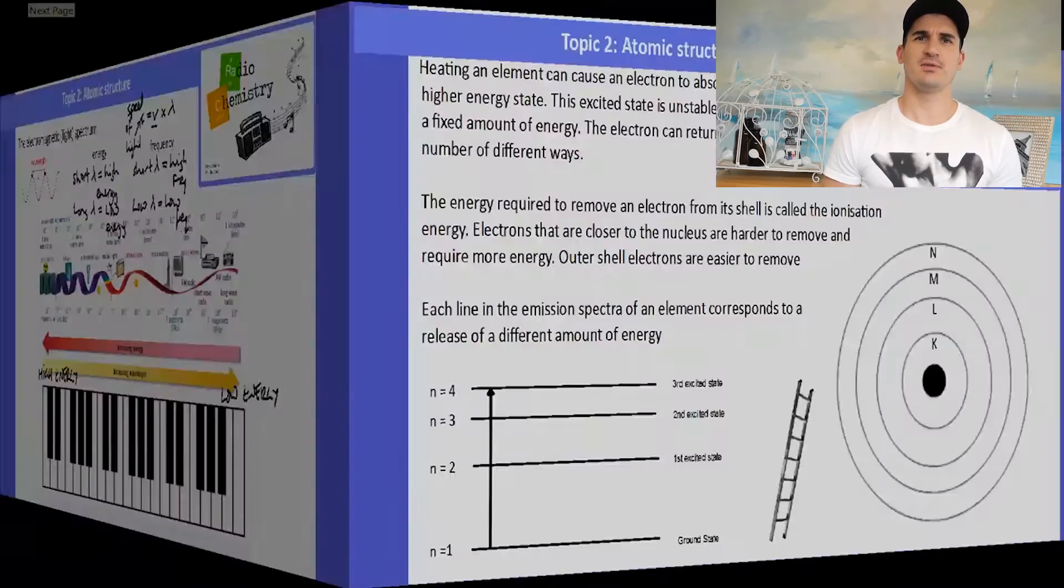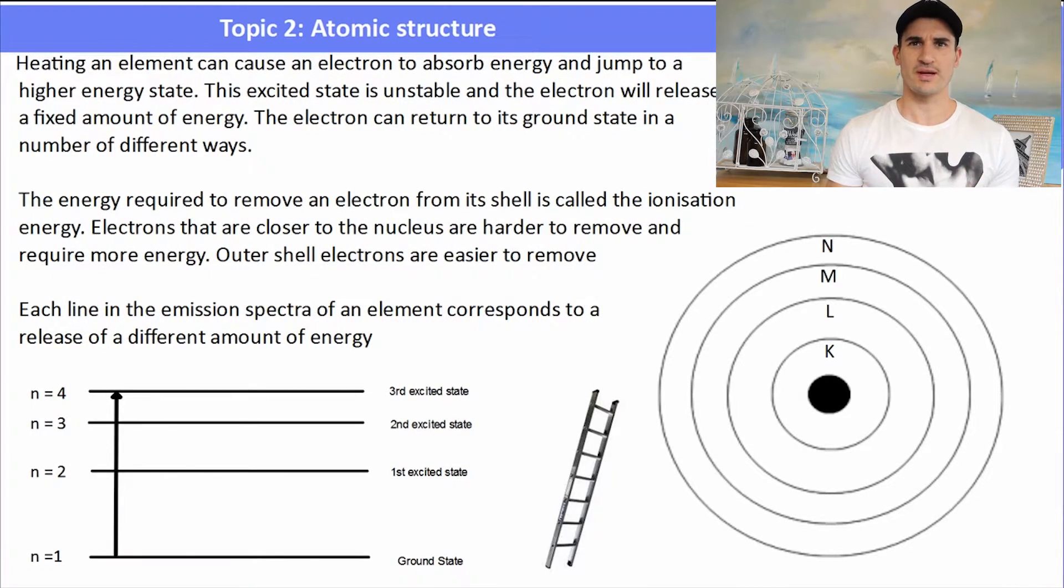Just like the prac, heating an element can cause an electron to absorb energy and jump to a higher excited energy level. That excited energy level is where the electron is unstable. So the electron might jump from the first shell to the fourth shell by gaining energy from the flame. It is now in an excited state. In that excited state, it's unstable and it doesn't want to exist in that state for a long period of time.